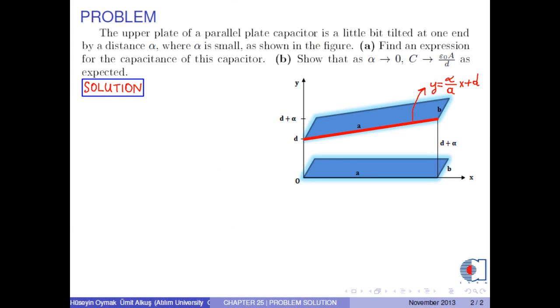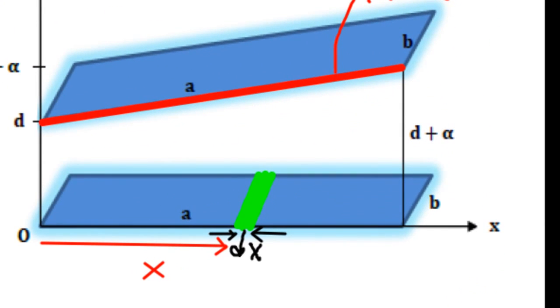Now, for the below plate, at a distance x, let's take an infinitesimal length dx, and take another piece on the upper plate parallel to this piece.